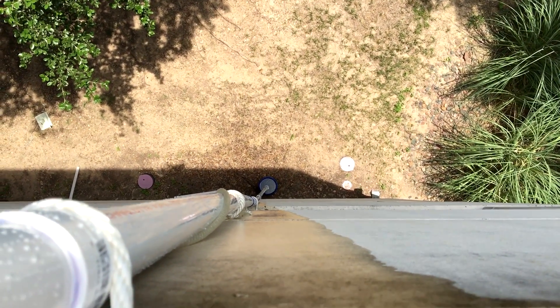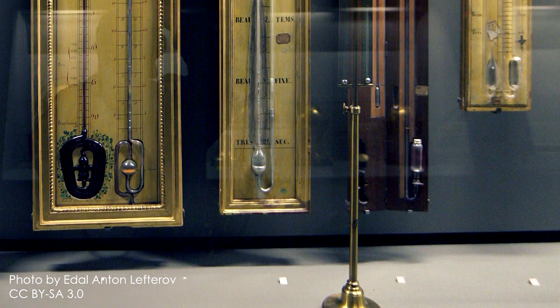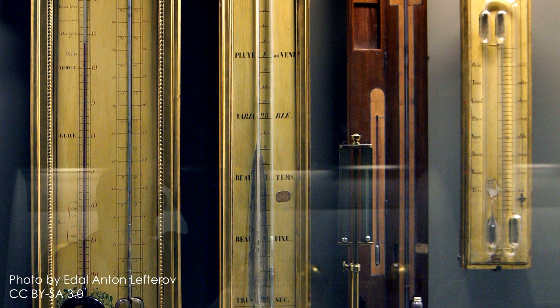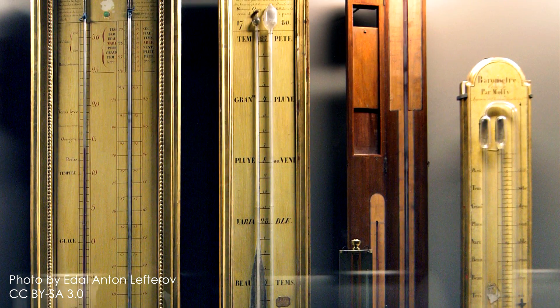Instead we use mercury, which is about 13 times as dense, so the column can be about 13 times shorter.